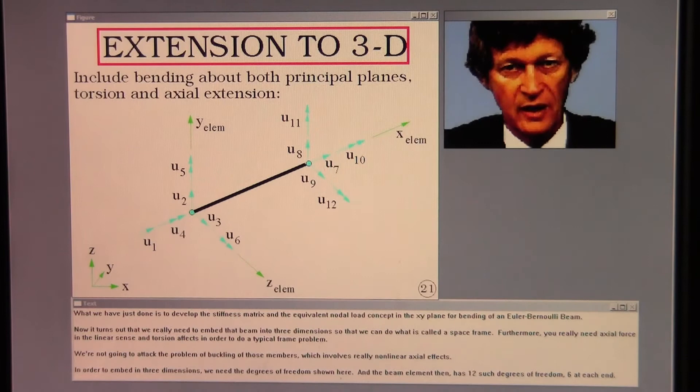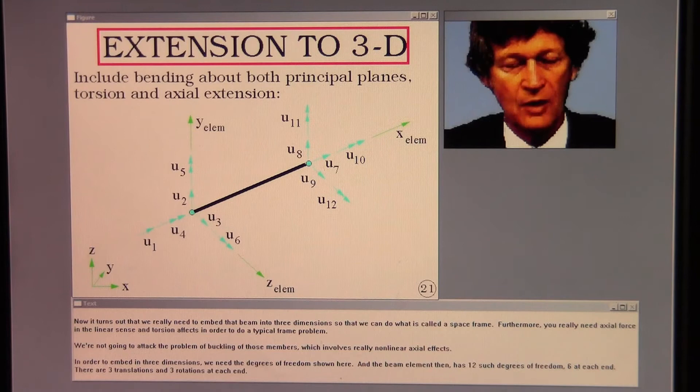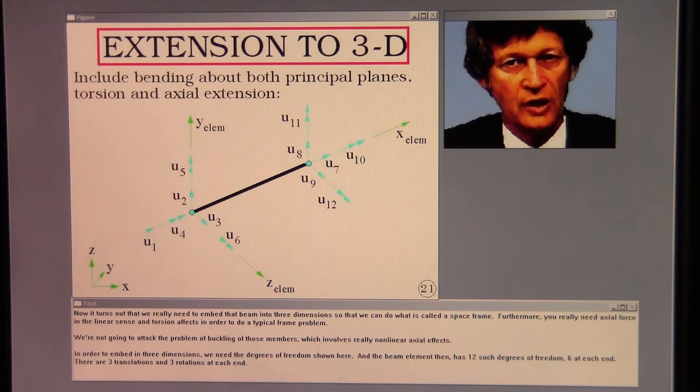What we have just done is to develop the stiffness matrix and the equivalent nodal load concept in the XY plane for bending of an Euler-Bernoulli beam. Now it turns out that we really need to embed that beam into three dimensions so that we can do what is called a space frame. Furthermore, you really need axial force in the linear sense and torsion effects in order to do a typical frame problem.